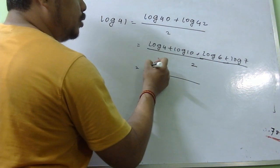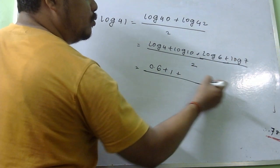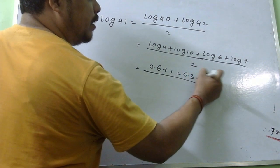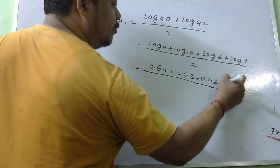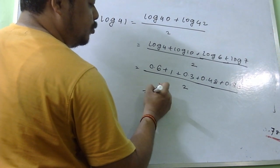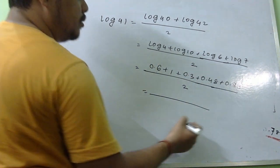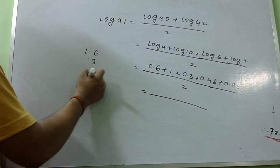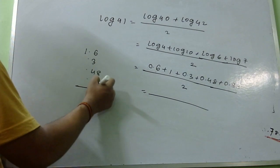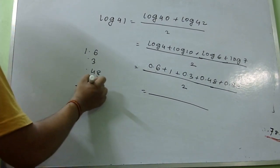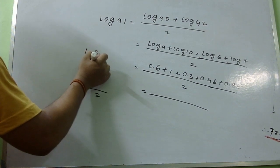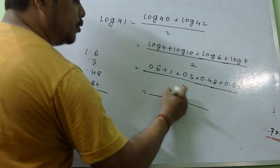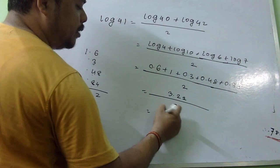Log 40 equals log 4 plus log 10 — that is 0.6 plus 1 equals 1.6. Log 42 equals log 6 plus log 7 — that is 0.3 plus 0.48 plus 0.84. Adding all values: 1.6 plus 0.3 plus 0.48 plus 0.84 gives 3.22, divided by 2 equals 1.61. So log 41 is approximately 1.61.